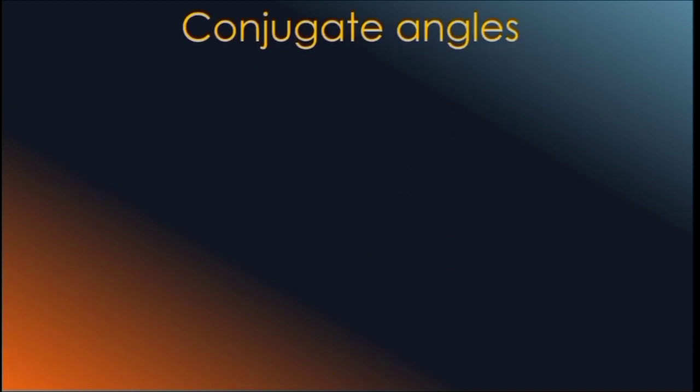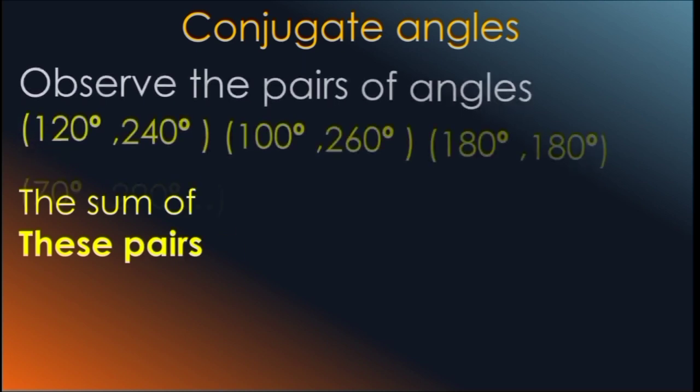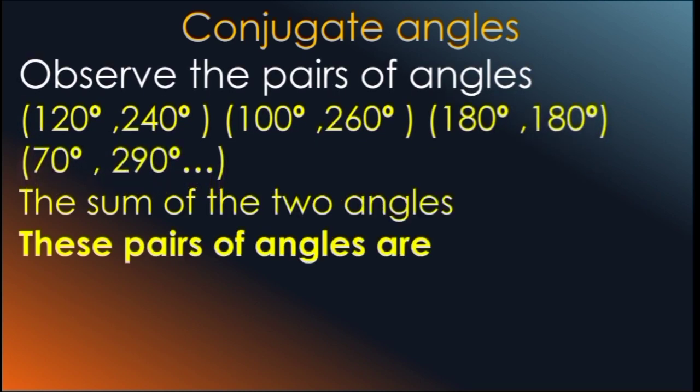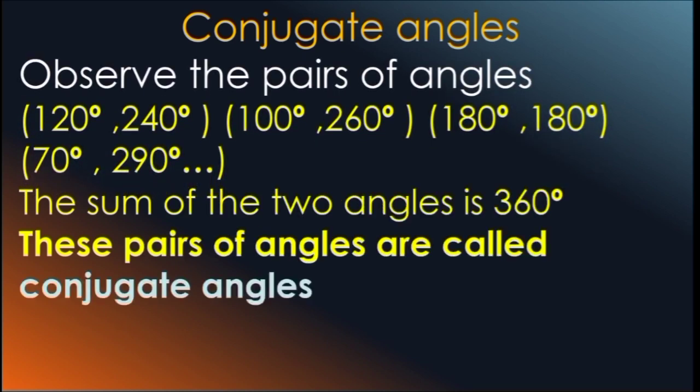Now, Conjugate Angles. Observe the pairs of angles: 120 degrees and 240 degrees, 100 degrees and 260 degrees, 180 degrees and 180 degrees, 70 degrees and 290 degrees. The sum of the 2 angles is 360 degrees. These pairs of angles are called Conjugate Angles.